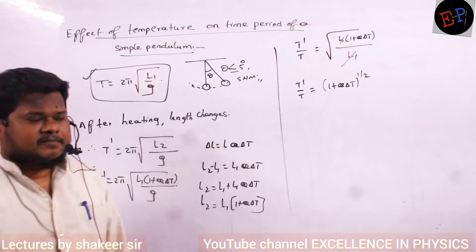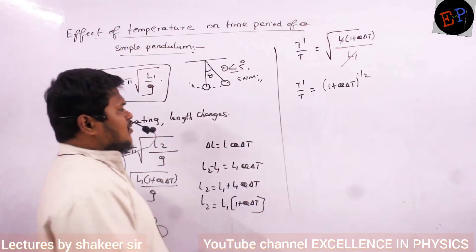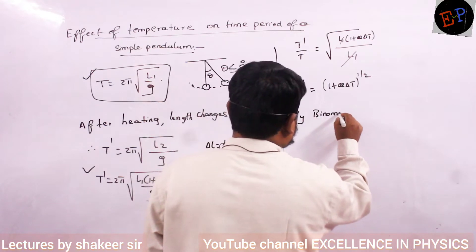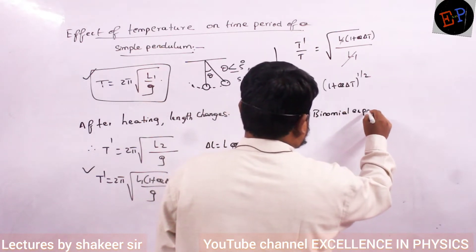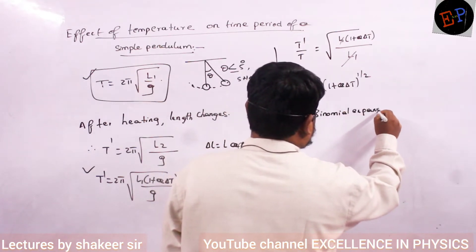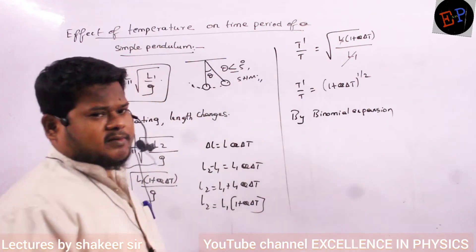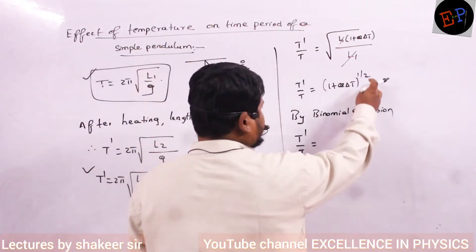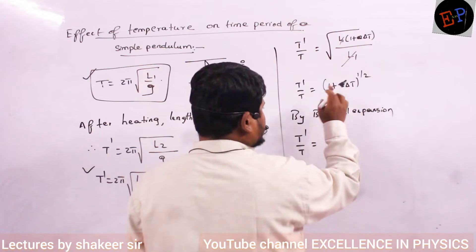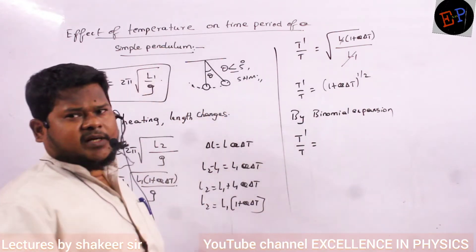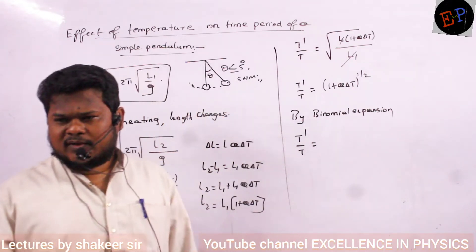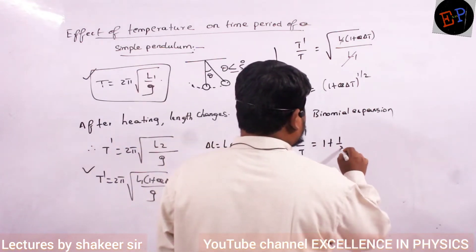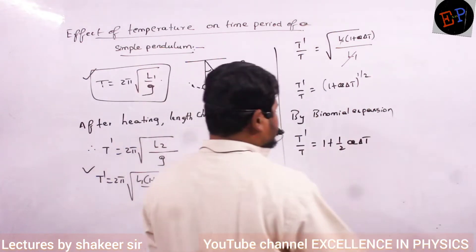The root can be written as power 1 by 2. Now by expanding this using binomial expansion — the power here comes as a coefficient to the second term, and all remaining terms are negligible and can be neglected. So therefore T dash by T equals 1 plus half α·∆T.